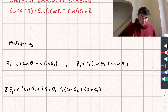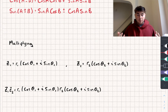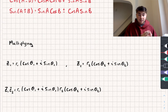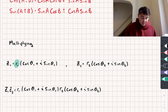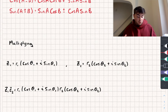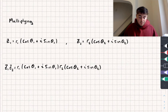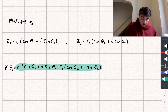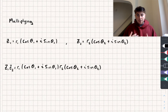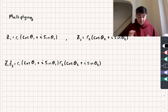Let's look at multiplication first. Say we have two generic complex numbers in modulus-argument form: for complex number z1 its modulus is r1 and its argument is theta1, and the same applies for complex number z2. If we multiply them together we're going to get something that looks like this.